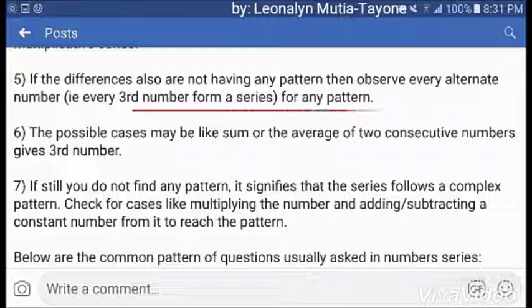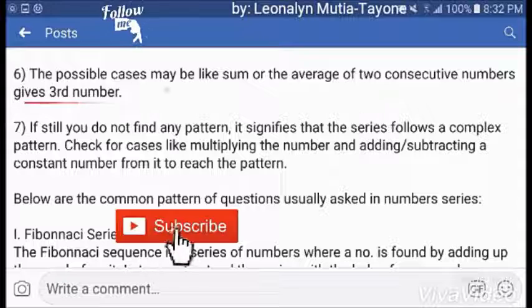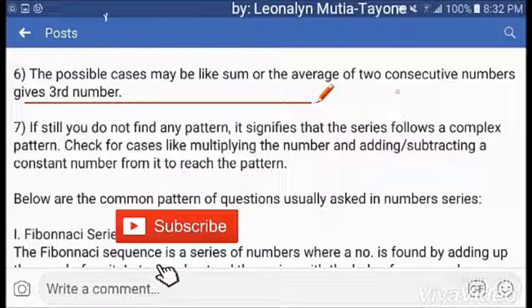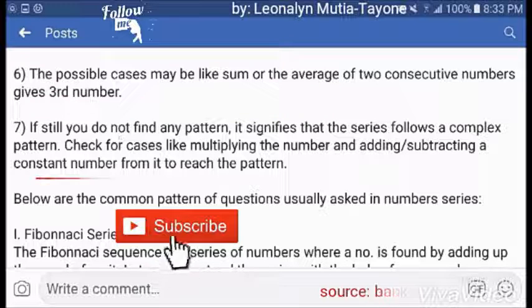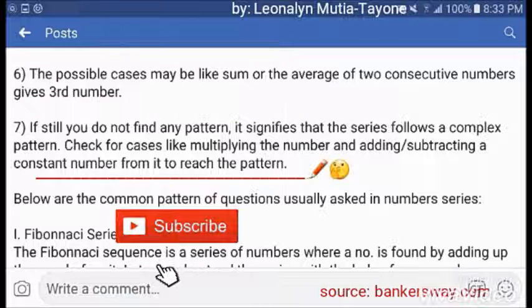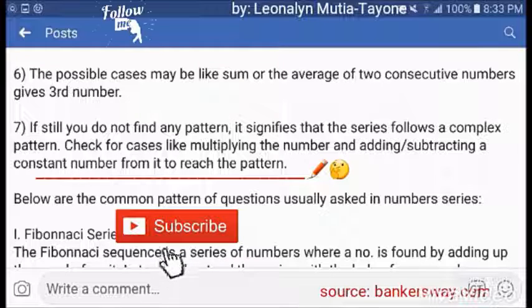Number 5. If the differences also are not having any pattern, then observe for every alternative number like third number form of series for any pattern. The possible cases may be like sum or the average of two consecutive numbers gives third number. If still, you do not find any pattern, it signifies that the series follows a complex pattern. Check for cases like multiplying the number and adding or subtracting a constant number from it to reach the pattern.